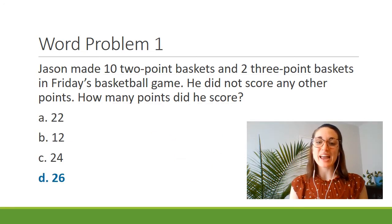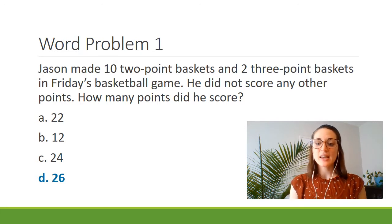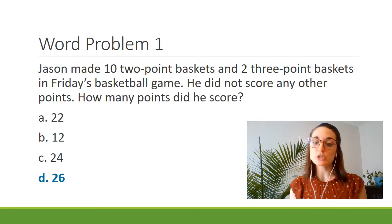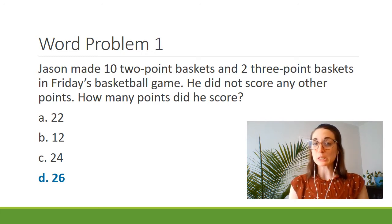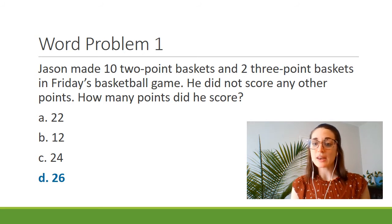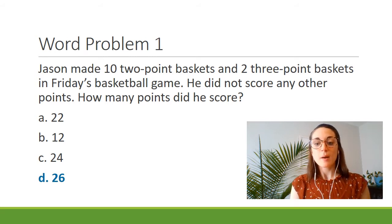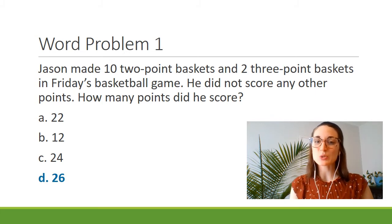Here you'll see the answers they might give you on a GED or HiSAT test — you'll have a multiple choice option bank. You can see we have twenty-two, twelve, twenty-four, twenty-six. Many of the numbers look similar to our answer. For example, if you just looked at the number ten and the number two in the word problem and didn't actually read what it was asking, you might jump to that twelve answer. But because we followed all of the steps and broke it down, we know the right answer is twenty-six.